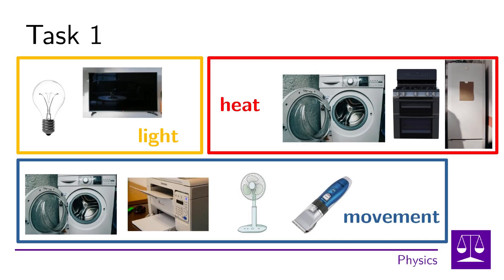Two things should be noted about this task. The first is that we have classified the washing machine into two groups: the motion and thermal appliance groups. This is because the washing machine heats the water to a certain temperature to better dissolve detergent, remove dirt, and kill dangerous bacteria. But at the same time, it rotates to disperse the detergent all over the laundry and at the end of the wash to get rid of excess water. Thus, an electrical appliance can be in multiple groups at once.